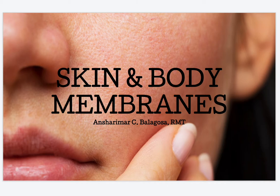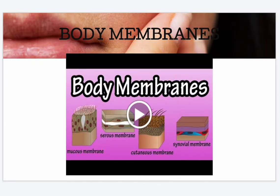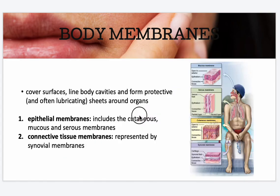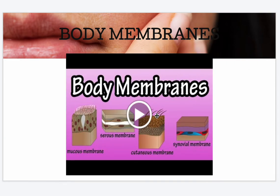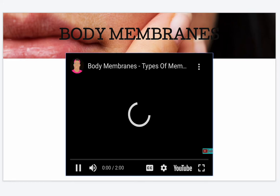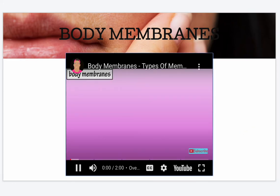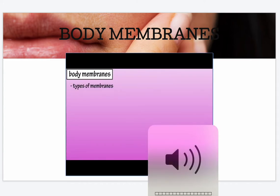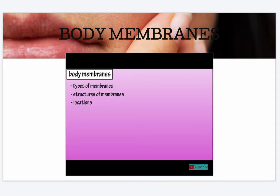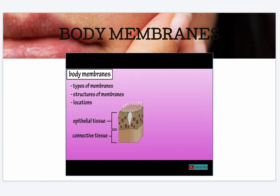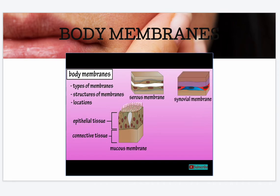This is the skin and body membranes. In this video, we're going to go over the types of body membranes, their structures, and the different areas in the body that they're located. Body membranes are comprised of epithelial tissue and connective tissue, and there are four types found in the body: mucus membranes, serous membranes, synovial membranes, and the cutaneous membrane.